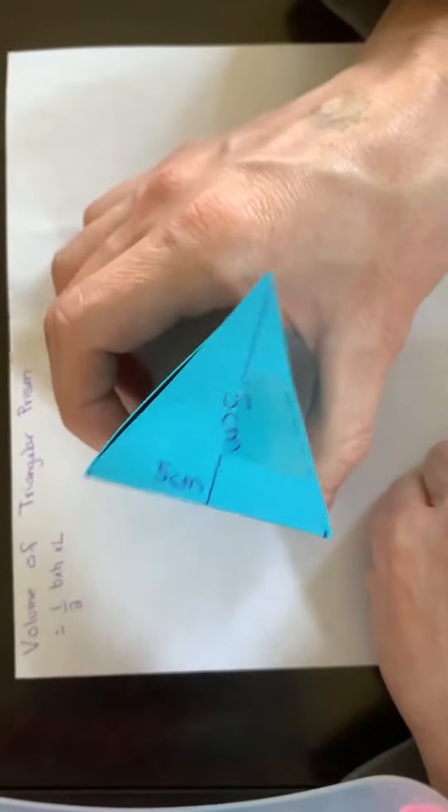I'm calculating the volume of a triangular prism. Unlike the rectangular prism, this time it does matter what the base is. Because it's a triangular prism, we want one of the bases to be the triangle shape.